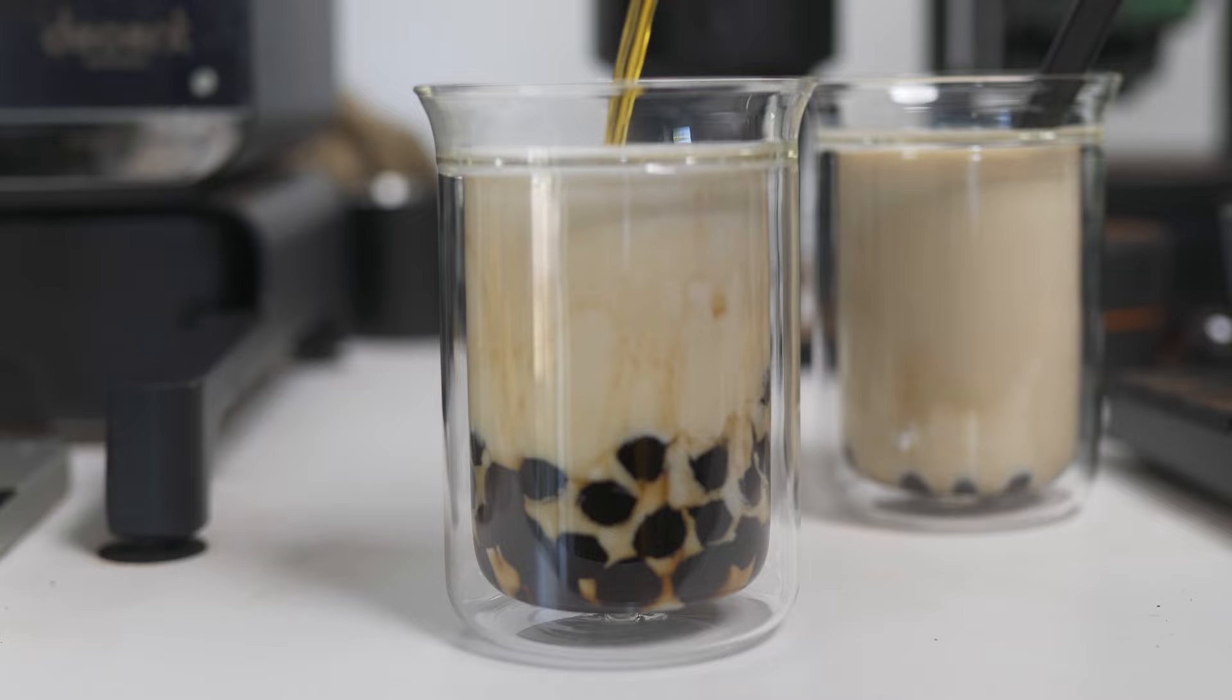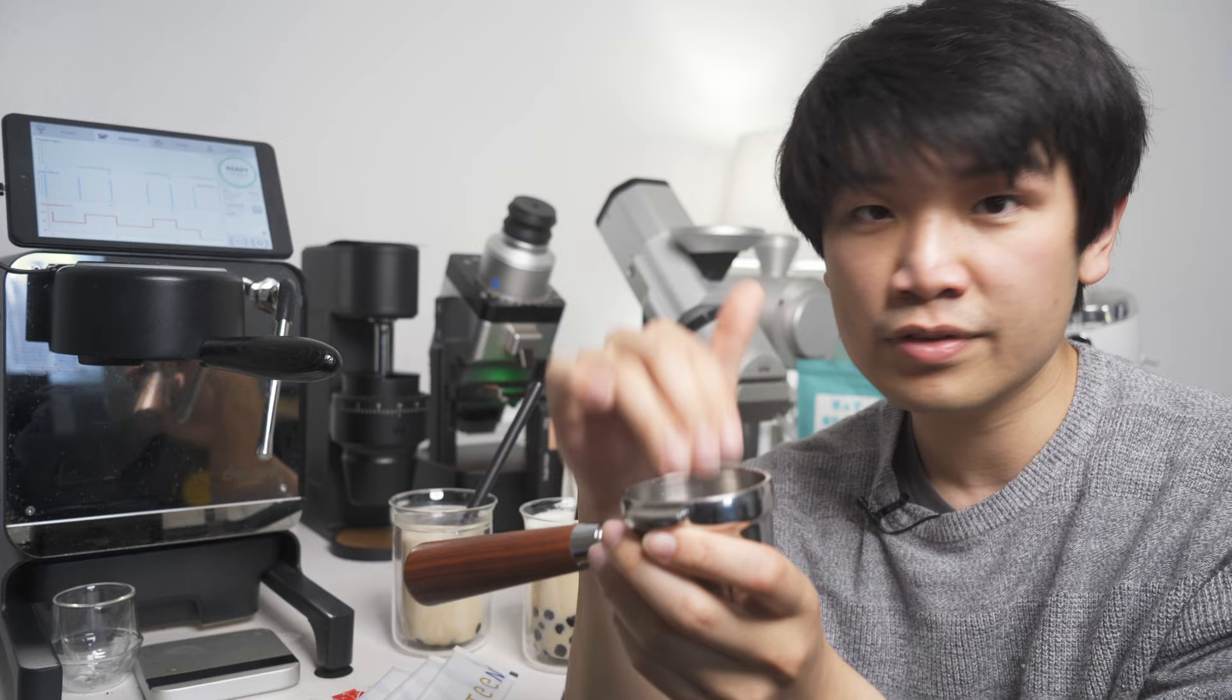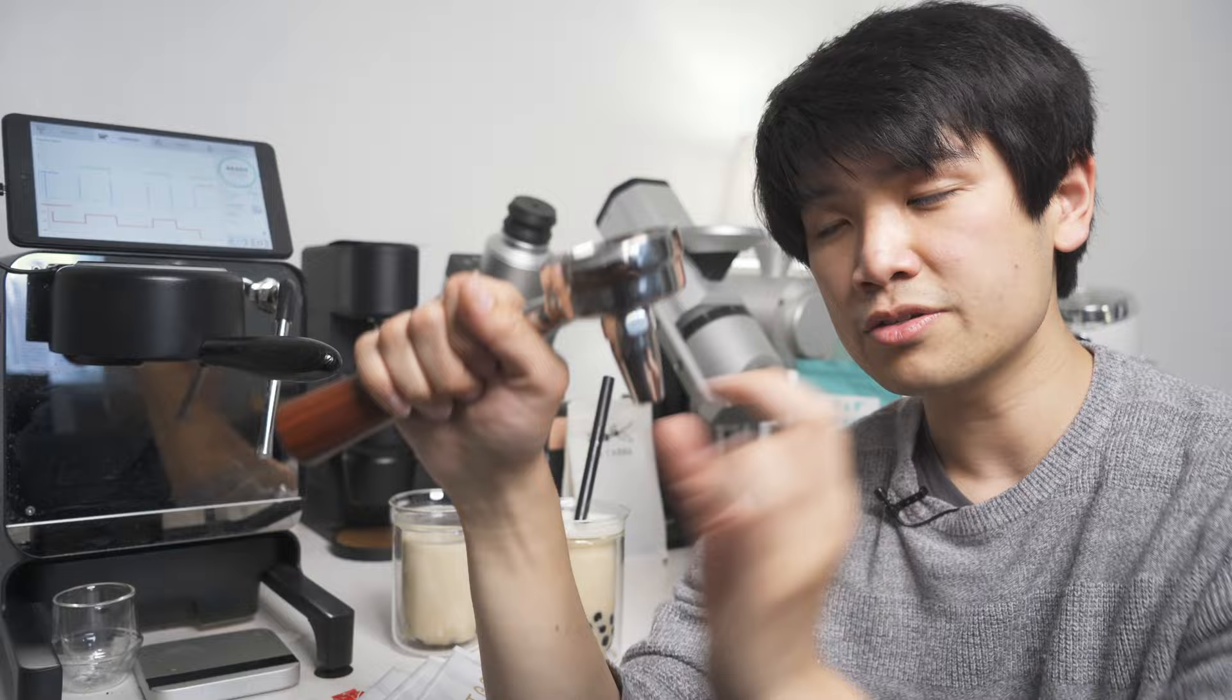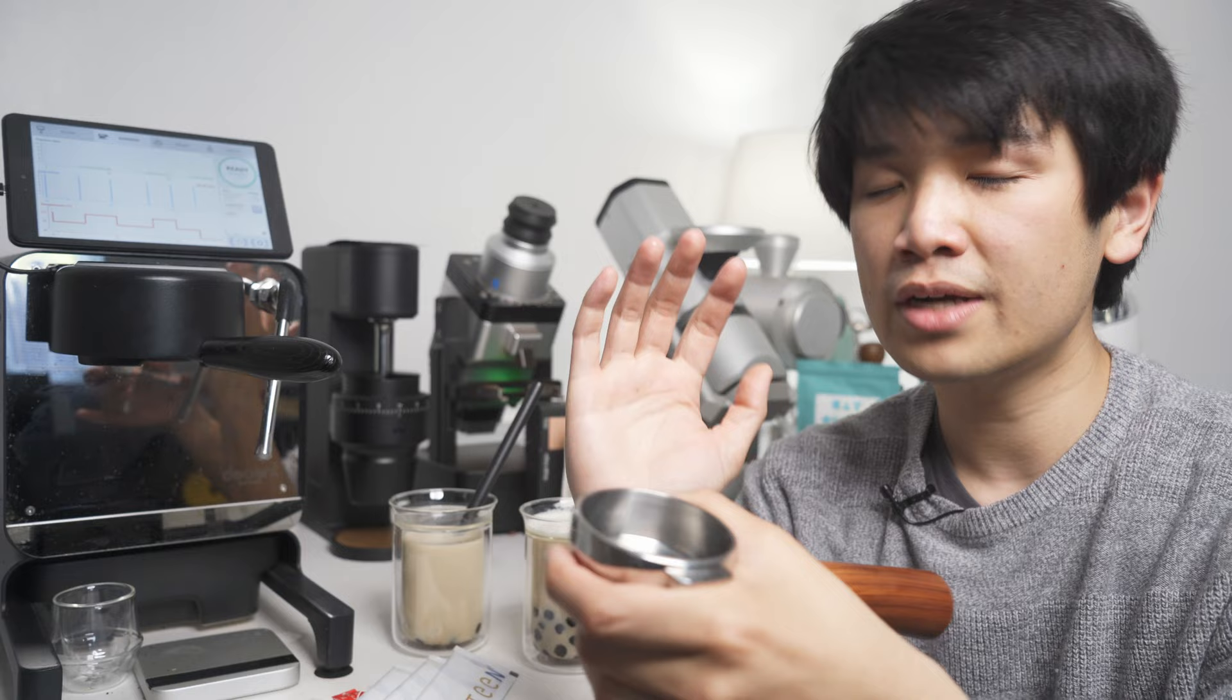This is a portafilter basket that fits in a Decent or E61 machine, and you will put tea leaves, finely ground tea, tea bags, anything like that in here. And when you run water through here, there's actually a pressure valve here that will allow you to build pressure, and you can actually make a really nice concentrated tea with this. And of course, this depends on how much water you add, temperature, and all of that.